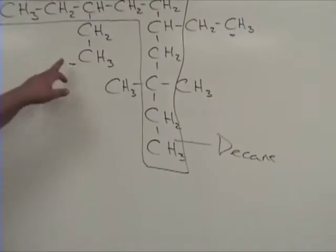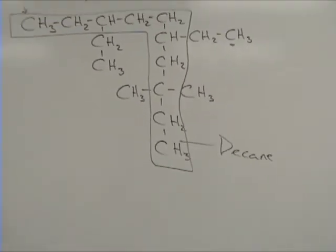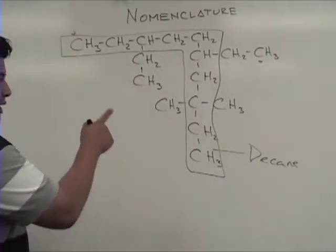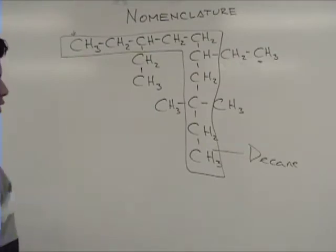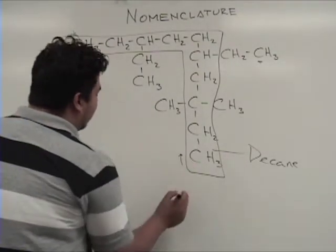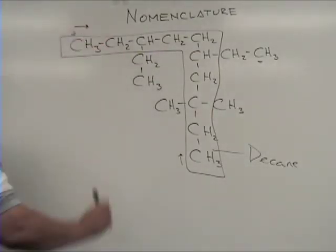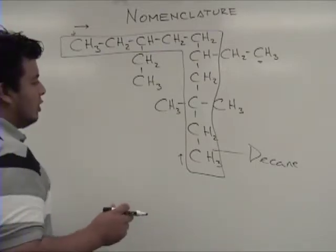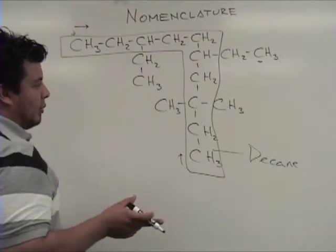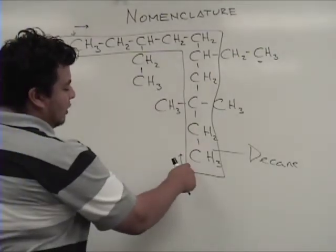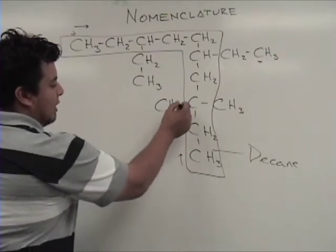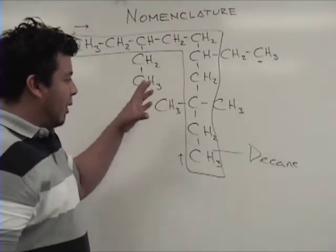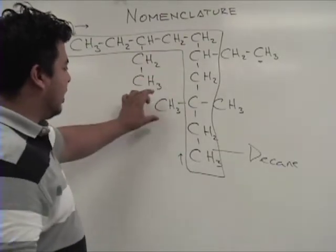Then the next step, the third step, is for you to find the substituents. Actually, the next step you should do is numbering this carbon chain. So you have a dilemma — you can either start from here or you can start from here. How are you going to determine that? The way you're going to do that is you got to give the substituents the lowest numbers possible. Substituents are the other things that are part of the compound but are not in the parent chain.